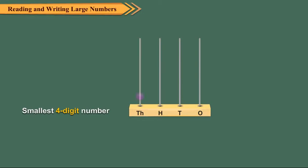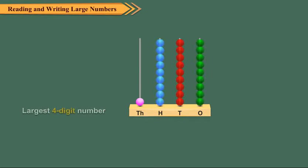Smallest four-digit number is 1,000. Largest four-digit number is 9,999.